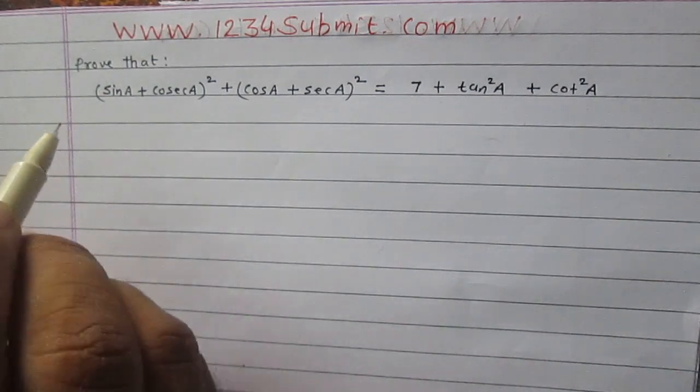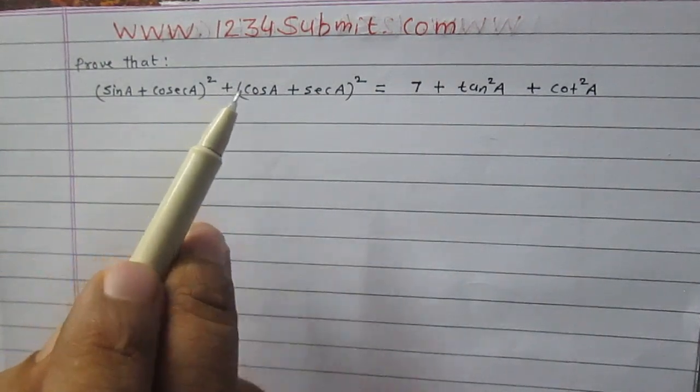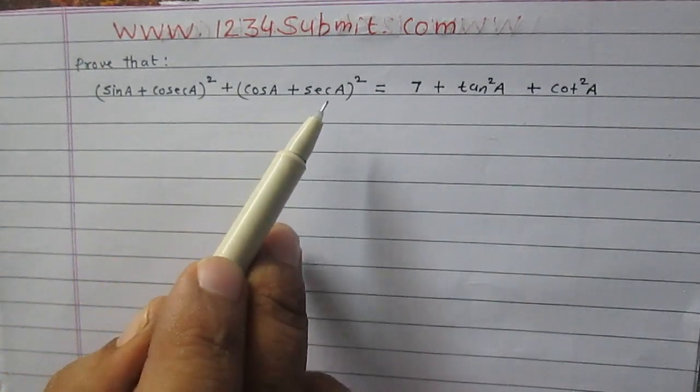Let us consider left hand side, that is (sin a plus cosec a) whole square and (cos a plus sec a) whole square.